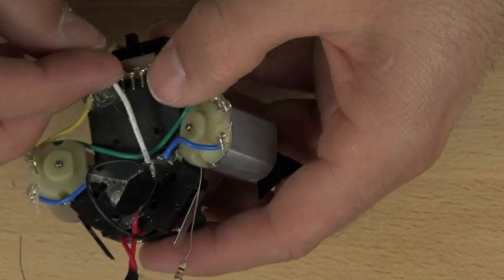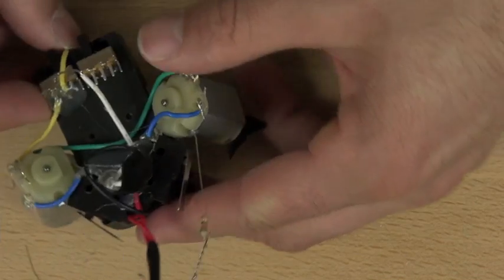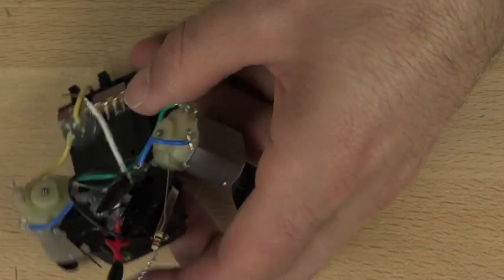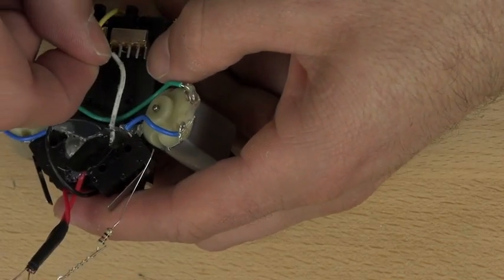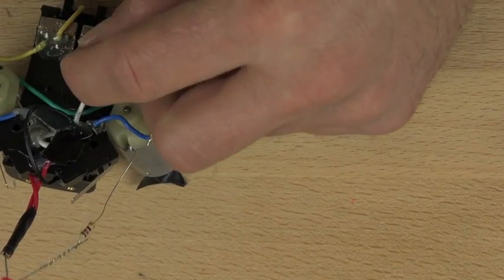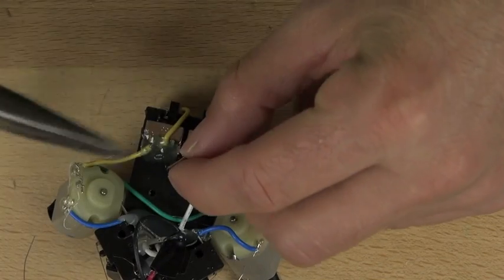All right, so we're almost there. Now what we're going to do is wire our LEDs, our eyes, so that they light up and we're going to use the other sliding single pole double throw switch to do that.